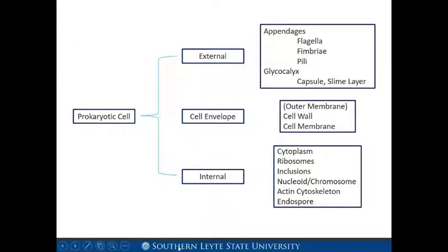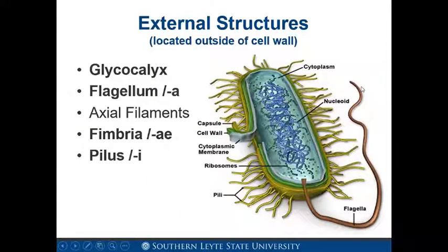Proceeding to learning objectives two and three: the prokaryotic cell is divided into three parts — the external, the cell envelope, and internal parts. The external will be reported by Ms. Alvar, the cell envelope by Ms. Apiag, and the internal by Ms. Kano. In the external part, we have appendages including flagella, fimbriae, pili, and glycocalyx — the capsule and the slime layer. The external structures are located outside of the cell wall.